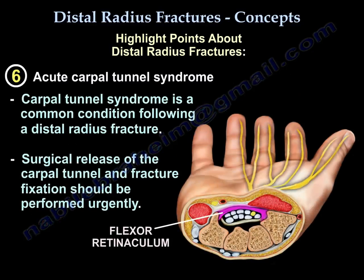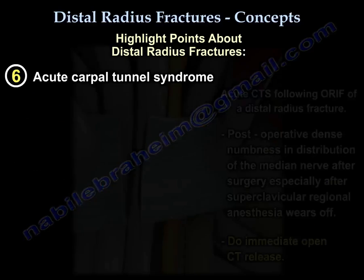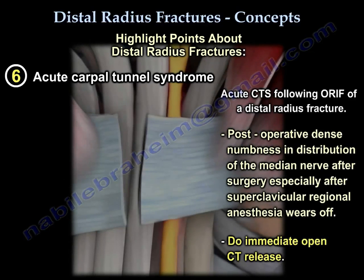Acute carpal tunnel syndrome is a common condition following a distal radius fracture. If it occurs before surgery, you need to do surgical release of the carpal tunnel and fixation of the fracture, and this should be done urgently. It can also occur following open reduction and internal fixation of the distal radius fracture. The patient will have dense numbness in the distribution of the median nerve after surgery, especially after supraclavicular or regional anesthesia wears off. You will need to do immediate open carpal tunnel release.